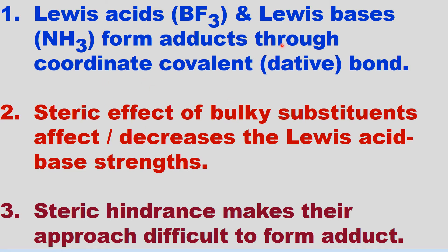In this class we study the steric effect on Lewis acid-base strength. Lewis acids — for example BF3 — and Lewis bases — for example ammonia — form adducts. The Lewis acid is an electron pair acceptor; the Lewis base, like nitrogen with a lone pair, is an electron pair donor. One atom donates both electrons to form a coordinate covalent bond, also called a dative bond.